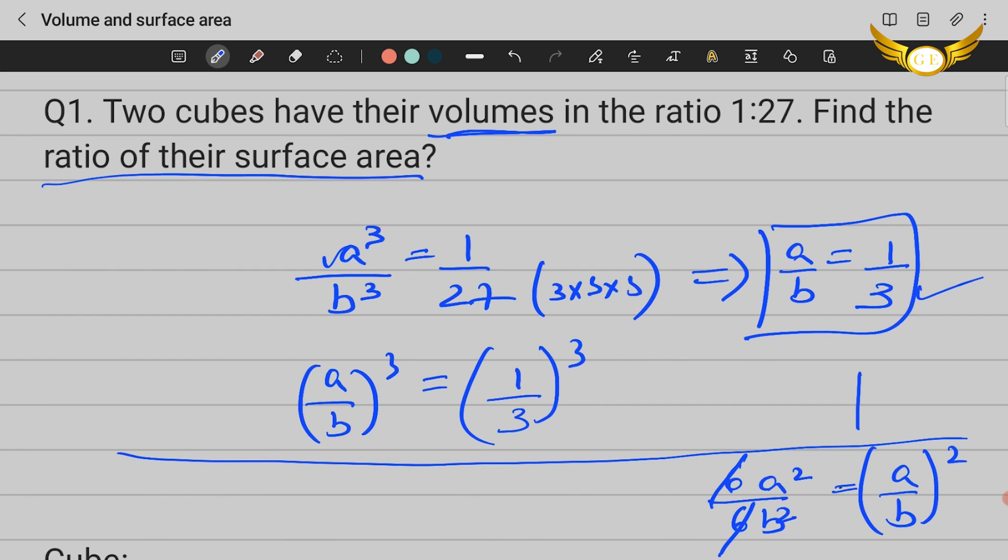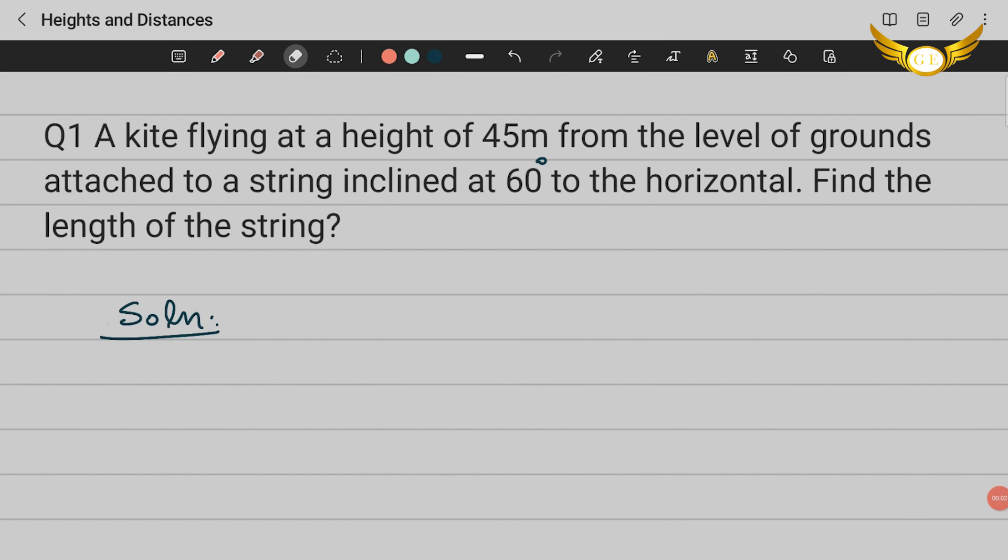So this is the solution for this question. You will have more variations for this. For now, we're just seeing one example. Now let's move on to the next question from the topic heights and distances. The question is: a kite flying at a height of 45 meters from the level of ground is attached to a string inclined at 60 degrees to the horizontal. Find the length of the string.